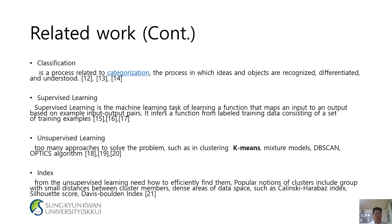Unsupervised Learning: There are many approaches to solve the problem, such as clustering — K-means, mixture models, DBSCAN, OPTICS algorithm. Index from unsupervised learning defines how to efficiently find clusters. Popular notions include groups with small distance between cluster members, dense areas of data spaces, using the Calinski-Harabasz index, silhouette score, and Davies-Bouldin index.